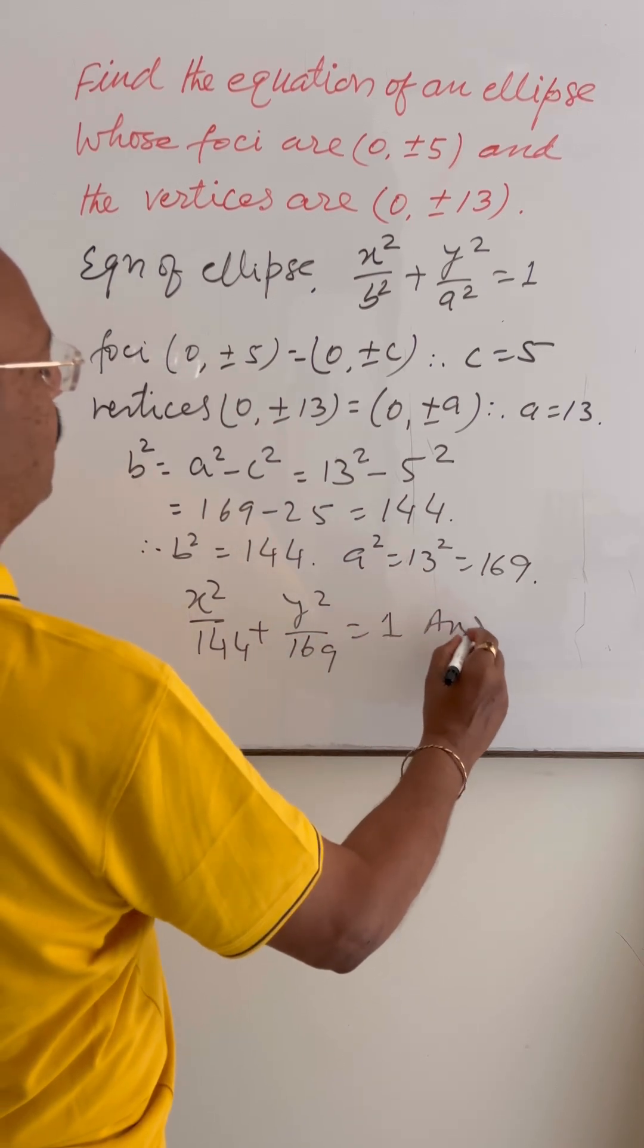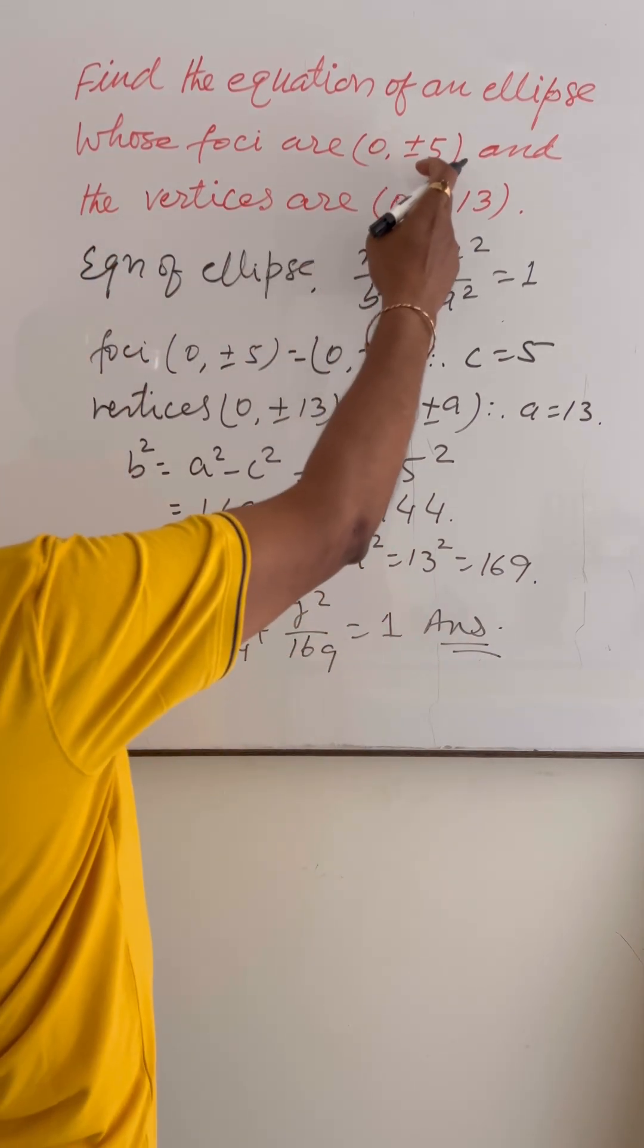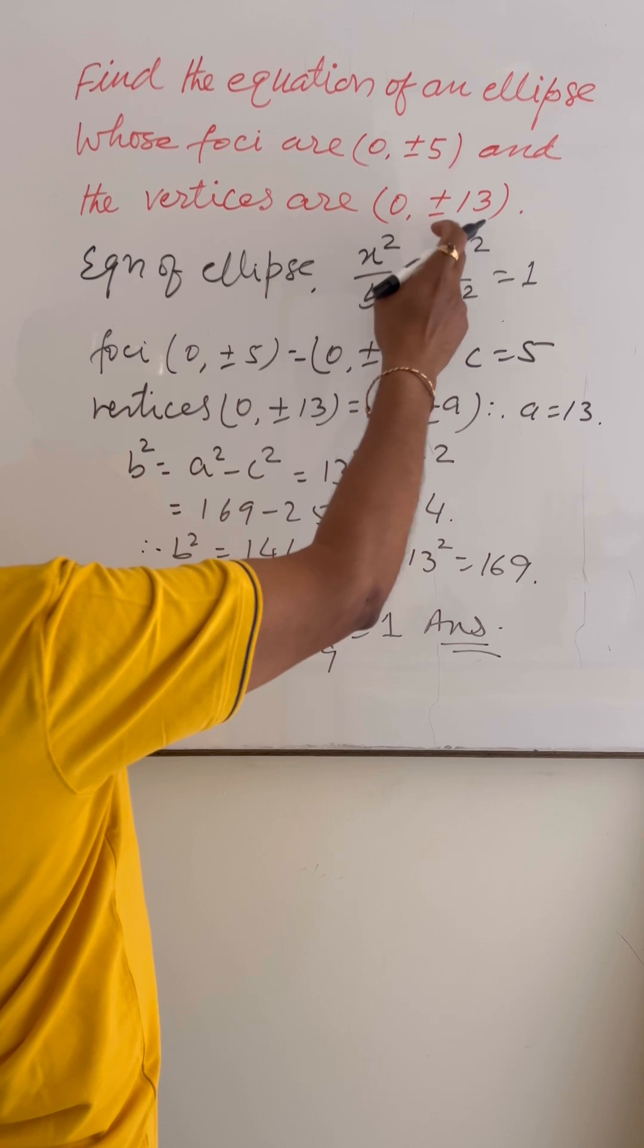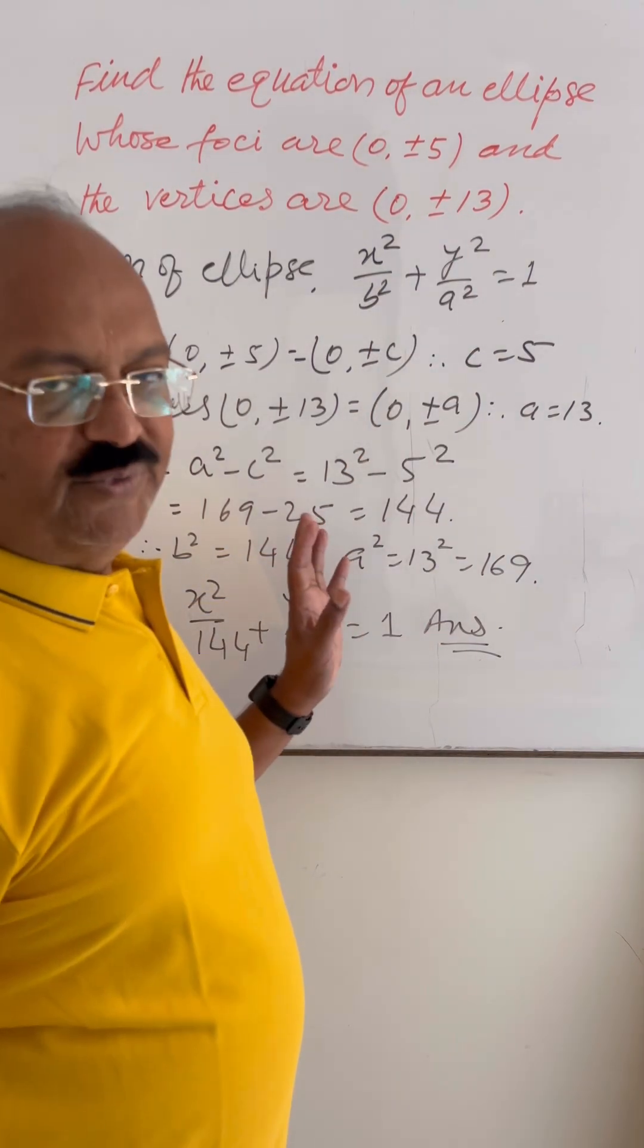So this is the required equation of the ellipse with foci (0, ±5) and vertices (0, ±13). This is the answer. Very interesting and important question. Hope you understood.